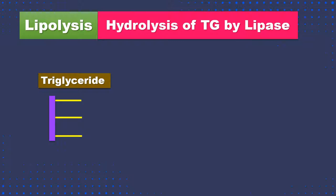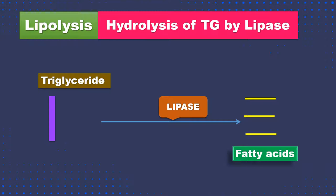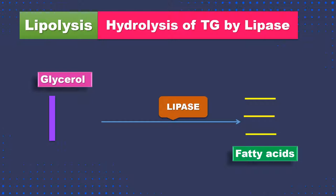Lipase hydrolyzes triacylglycerol or triglycerides, which are the lipids stored in our body mainly in adipose tissue and also in the liver and some other tissues. These triglycerides undergo hydrolysis with the help of lipase to yield fatty acids one by one. The glycerol backbone that remains will be taken to the liver and utilized for gluconeogenesis.